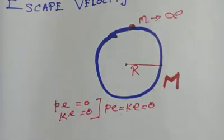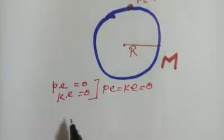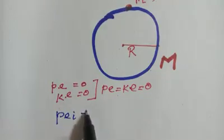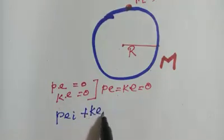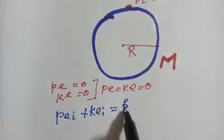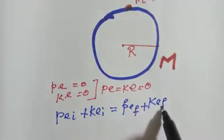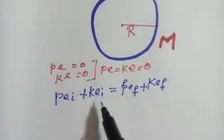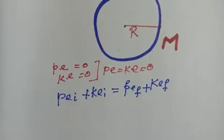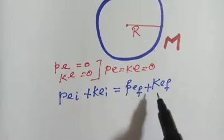By the law of conservation of energy, the potential energy at the initial stage plus the kinetic energy at the initial stage will always be equal to the potential energy at the final stage plus the kinetic energy at the final stage. Energy can neither be created nor destroyed.